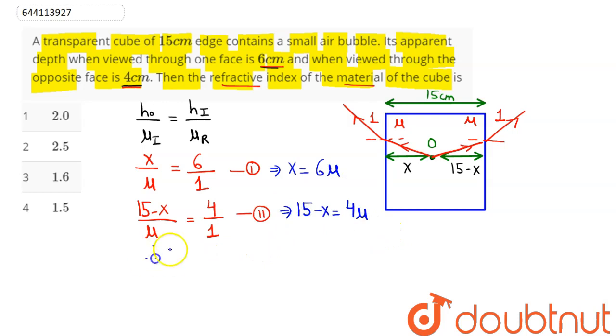Therefore, from these two equations, we can say 15 minus 6 mu is equal to 4 mu. 10 mu value comes out as 15, which implies mu comes out to be 1.5. 1.5 means option number 4 is the answer, so 4 is our correct answer.